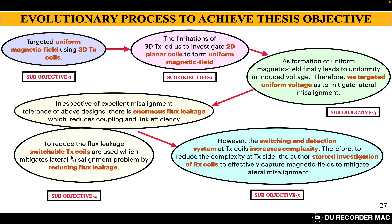We have proposed two distinct designs based on switchable transmitter coils. Then later, we understood that because of the switchable transmitter coils and also the detection systems, the complexity and the cost of the system is increasing. So why not move to the receiver side instead of targeting more on the transmitter side. Therefore, we also started the investigation of receiver coils to effectively capture the magnetic fields to mitigate the misalignment problems. In this way, we underwent from 3D transmitter coils to switchable transmitter coils at sub-objective 4, and finally, we also started investigating at the receiver coil side.